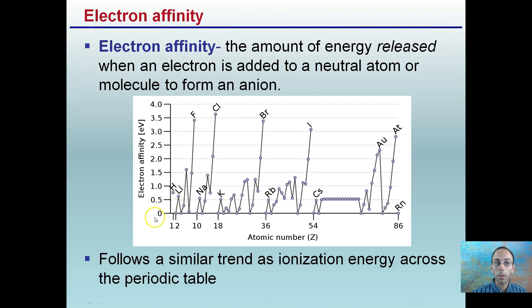Electron affinity. Electron affinity is the amount of energy released when an electron is added to a neutral atom or molecule to form an anion. Anions are negative ions, and that occurs when we add an electron. This follows a similar trend to ionization energy across the periodic table. So, again, if we learn one, we can see electron affinity has some of the same properties to that.